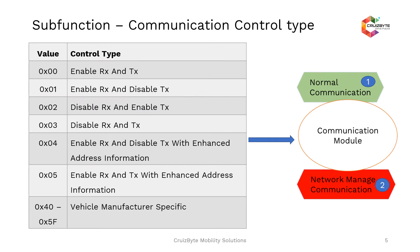Let me take you through the different communication control types possible. The control type covers receive and transmit — you can either enable or disable RX-TX for normal communication mode or network management communication messages. So 0x01 is enable RX and disable TX for normal communication or network management communication messages, and so on. Values 0x00 to 0x03 are specific to these two types of communication within the ECU server.